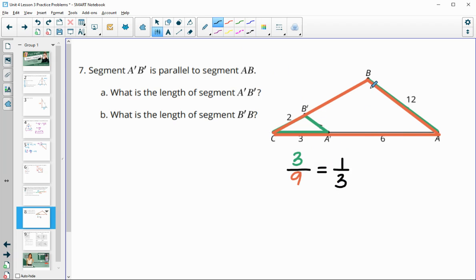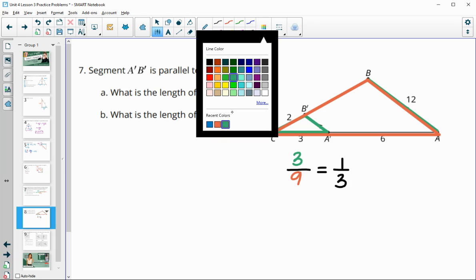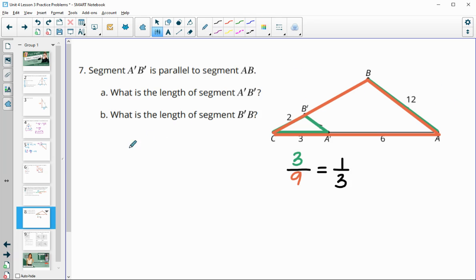So this green segment is going to be 1 third the length of its corresponding part 12. So A'B' is going to equal 1 third of 12 or 12 divided by 3. So that is going to be 4.